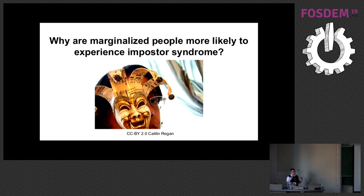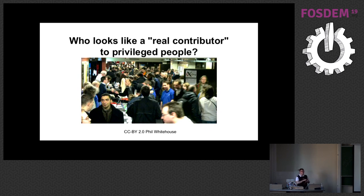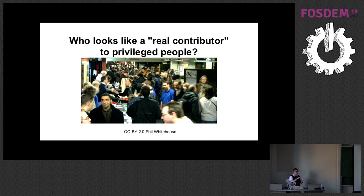One thing I want to cover is why marginalized people — people from groups underrepresented in free software — are more likely to feel imposter syndrome. Part of that is based on our assumptions. When privileged people attend a conference, they see a particular majority. People from underrepresented groups are not going to see themselves reflected in the community, in the speakers, or in the people who organize conferences. And so part of imposter syndrome is looking around and asking, 'Do I belong here?'